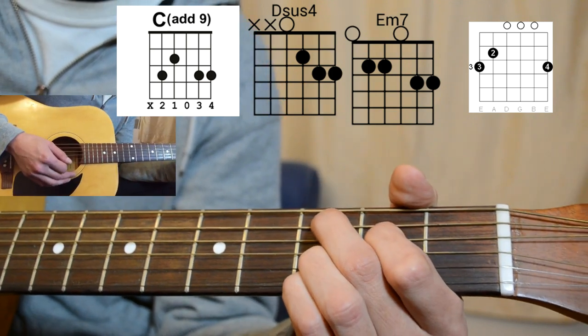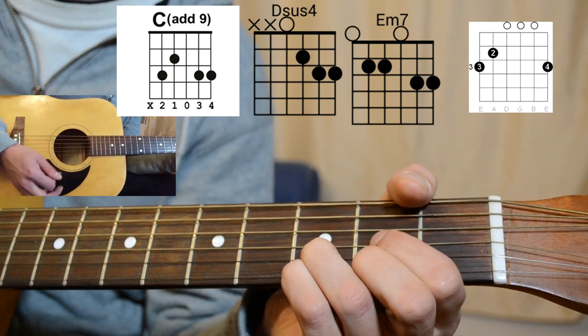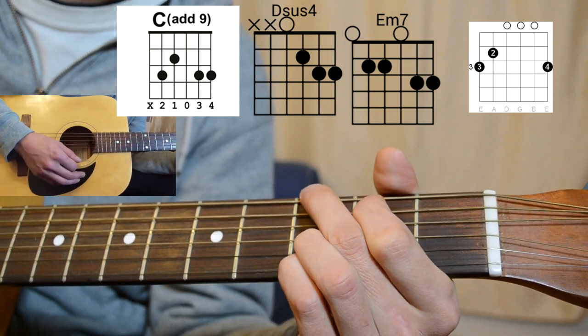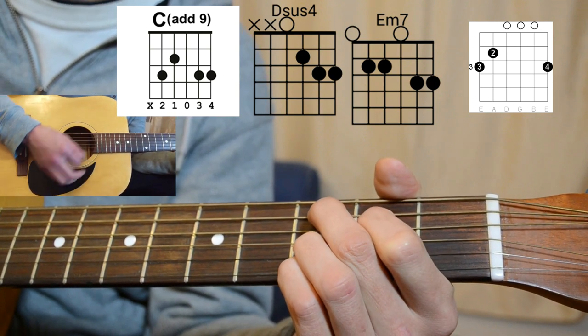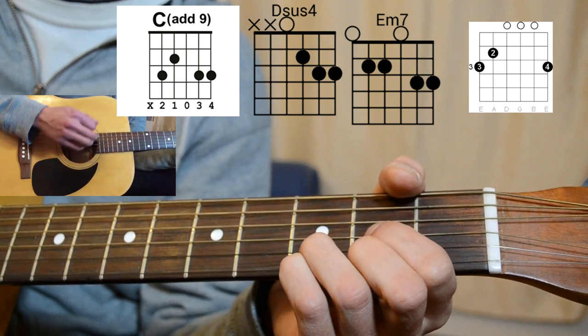So we're going to start off with our C add 9. To the D, to the E minor 7th, to the G. Step out the front door like a ghost into the fog...